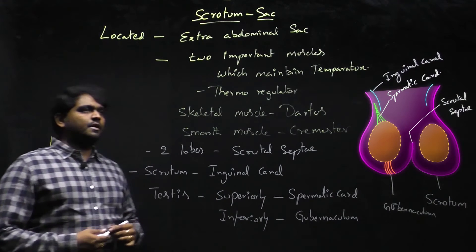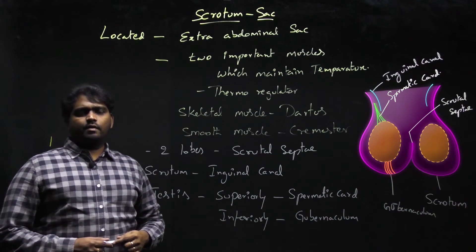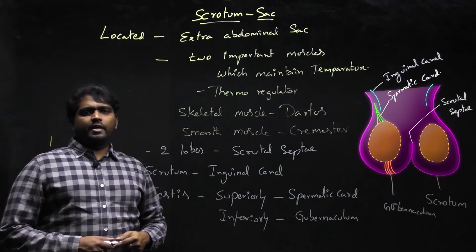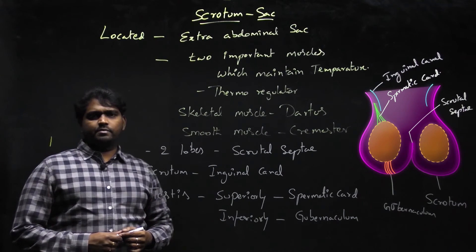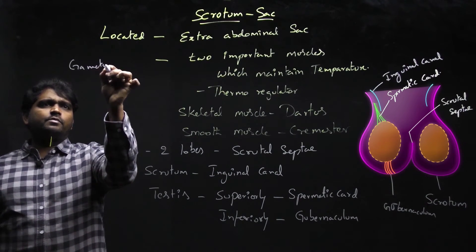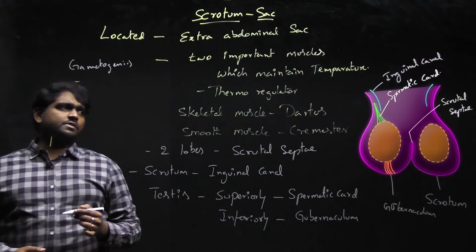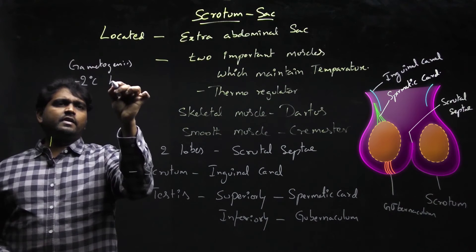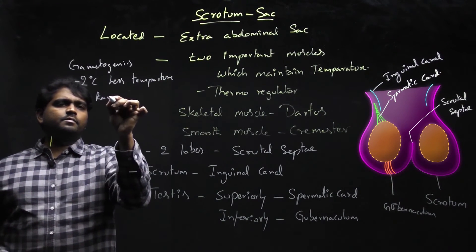So this is the complete picture about the scrotal sac. The scrotum is located in the extra-abdominal region and mainly it maintains temperature. Why does it maintain temperature? Because for the gametogenesis process, it requires lower temperatures than body temperature. That is why the scrotum maintains a temperature two degrees less than body temperature.